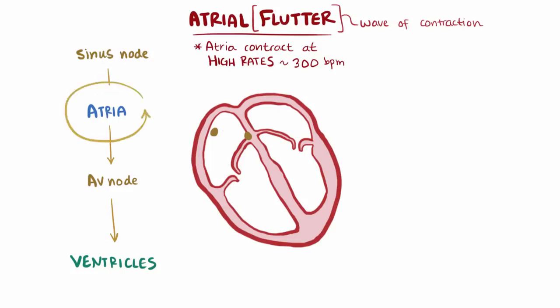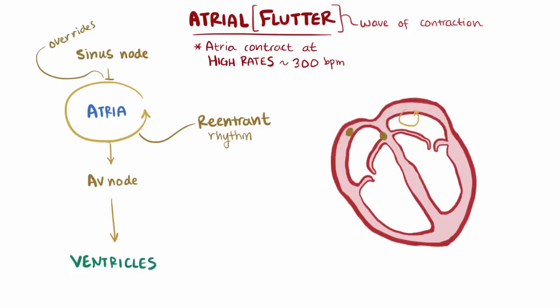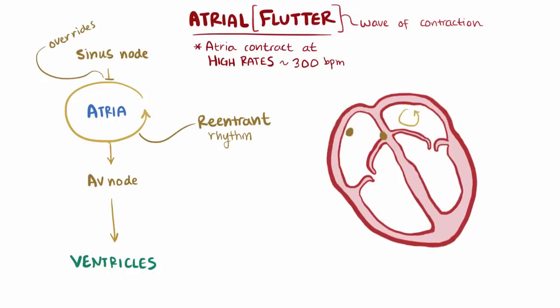With atrial flutter, a re-entrant rhythm starts in either the right or the left atrium. Re-entrant signals loop back on themselves, overriding the sinus node and setting up an endless cycle that causes the atria to contract again and again at really fast rates. There are actually two types.